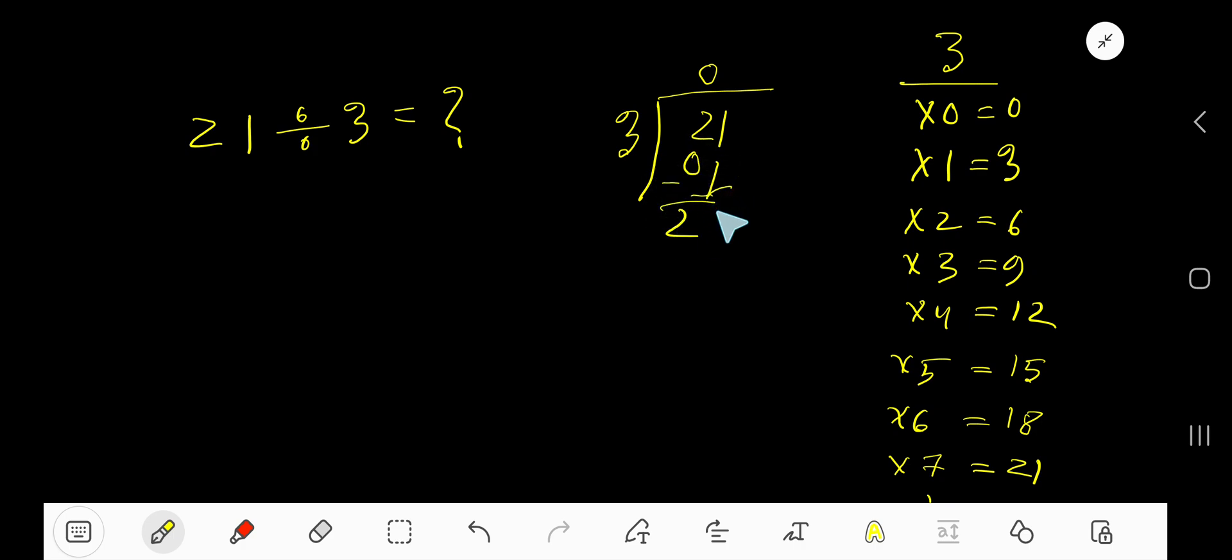Bring down this digit to make 21. 3 goes into 21 how many times? 3 goes into 21 seven times.